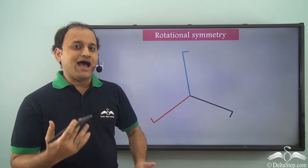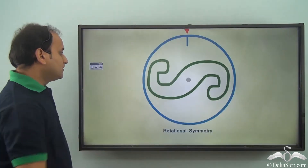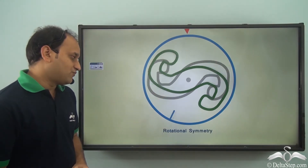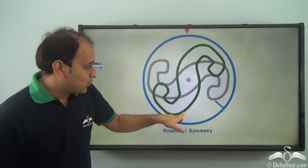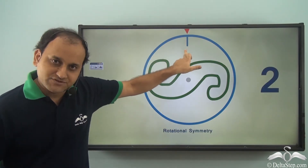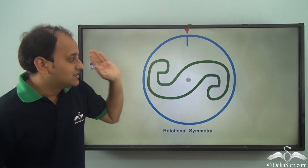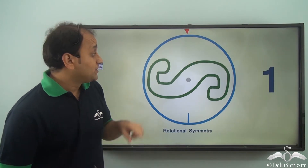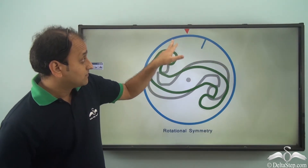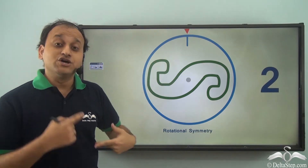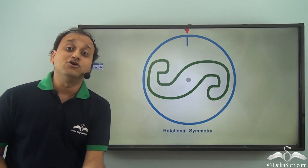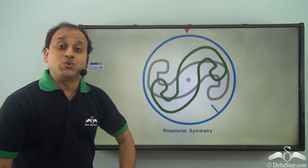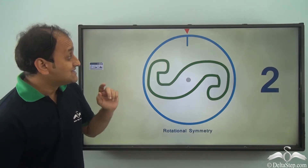Let's understand how this works. I have this particular object which shows rotational symmetry. When we rotate it one time and two times — in one complete circle — the object looks exactly the same as its initial position. As it reached one full turn, we saw it two times looking exactly the same as its initial position. This is very important when we talk about rotational symmetry.